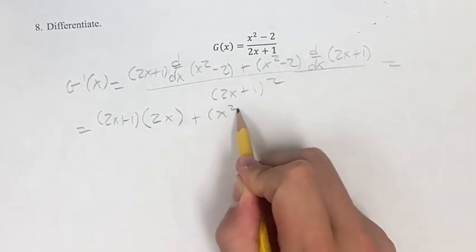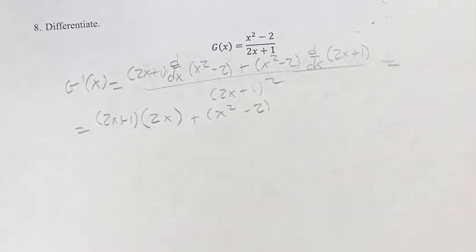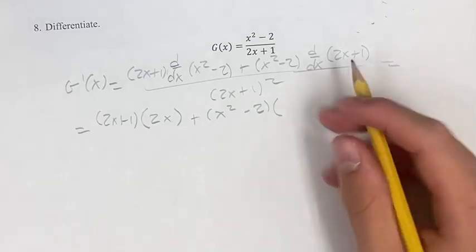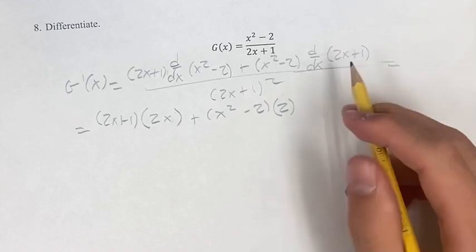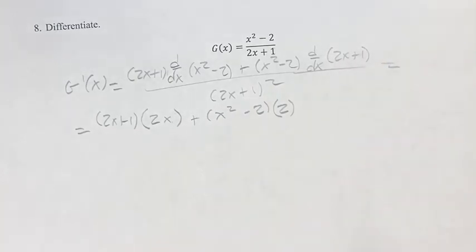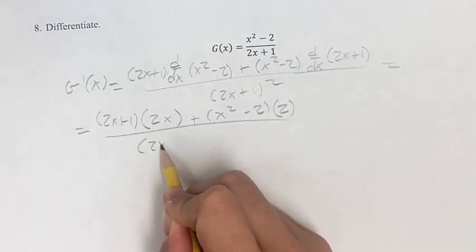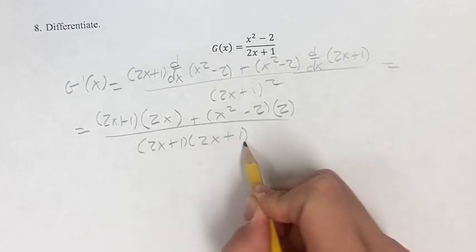Plus x squared minus 2 times the derivative. 2x is just going to be 2 whenever you have a linear term with x to the first power. Its derivative is just going to be the coefficient, which in this case is 2. Plus the derivative of 1, again is a constant, so its derivative is 0. 2 plus 0, just write 2, easier. Times 2x plus 1, or divided by 2x plus 1 times 2x plus 1.